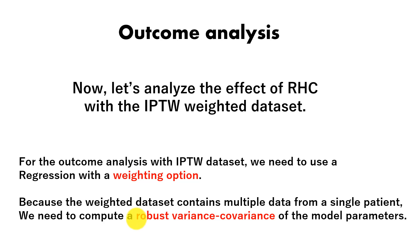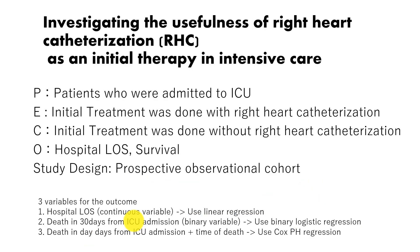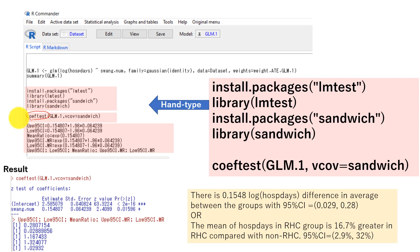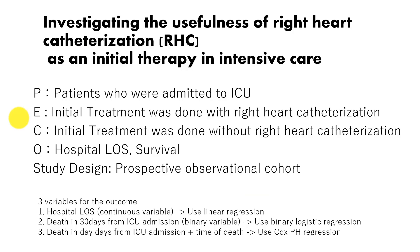For the second part, we compute a robust variance-covariance estimator for model parameters, and we are going to use a function called coeftest. This will enable us to compute robust variance-covariance for the model parameters. These two things are slightly different from the regular analysis using linear regression, binary logistic regression, and Cox proportional hazard regression.